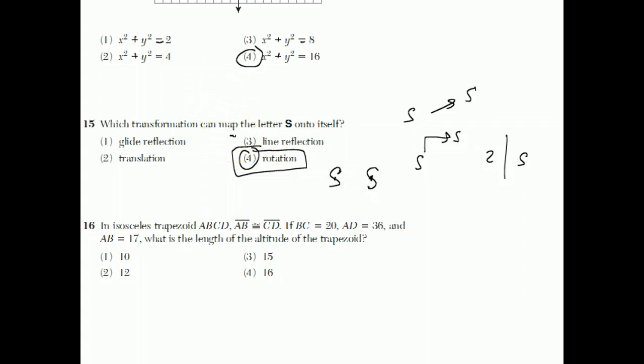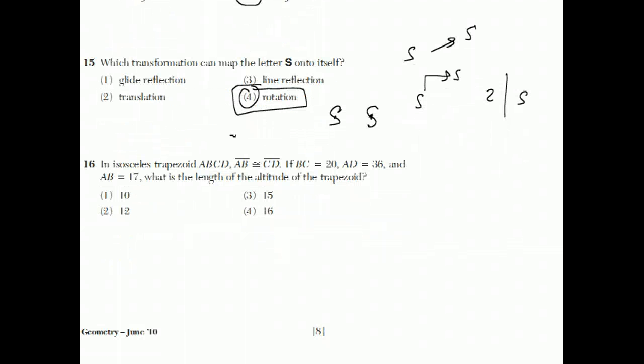Moving on to question 16. An isosceles trapezoid A, B, C, D. So an isosceles trapezoid looks something like this. It's a trapezoid, has one pair of parallel sides, but isosceles means these two sides are equal. So it says A, B is congruent to C, D, so they're telling us that those are the two congruent sides. B, C is 20, A, D is 36, and A, B is 17. And they want to know what's the altitude of this trapezoid. I like this question. They're asking this. The altitude forms a right angle.